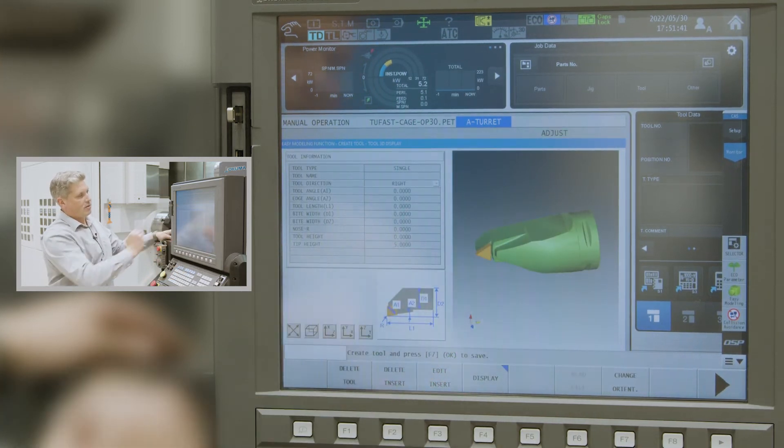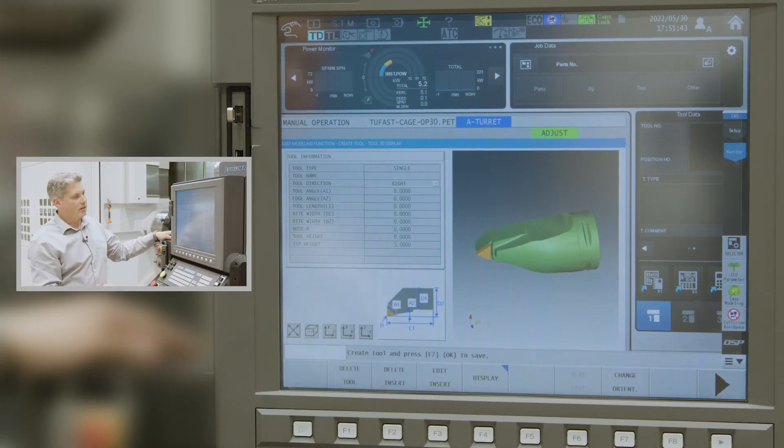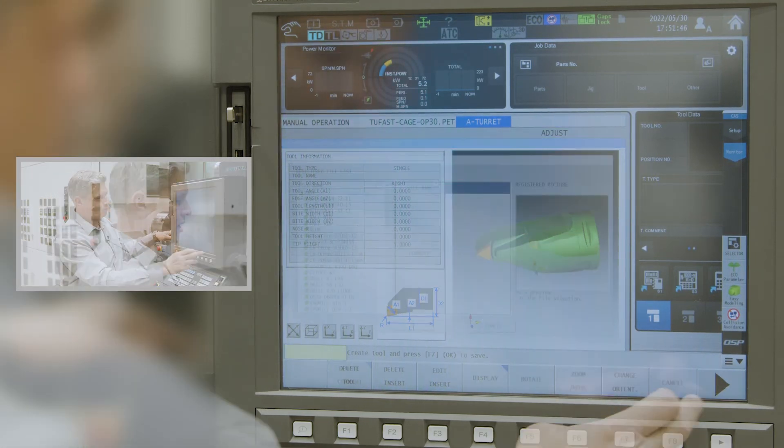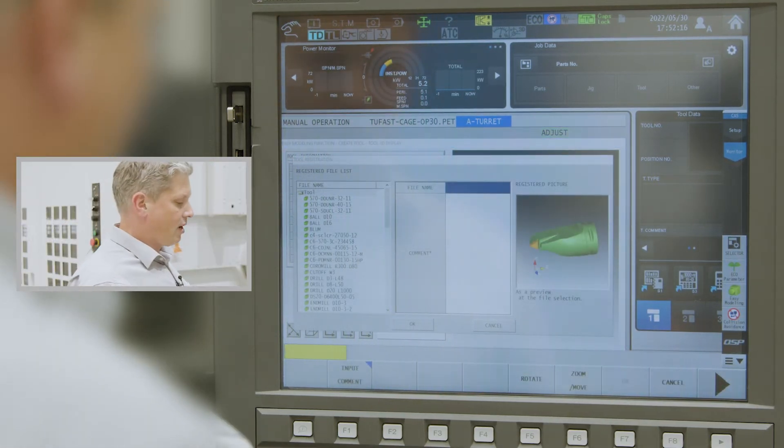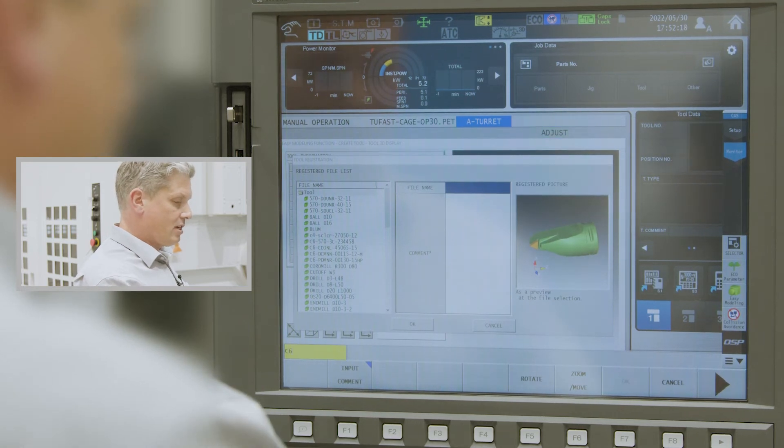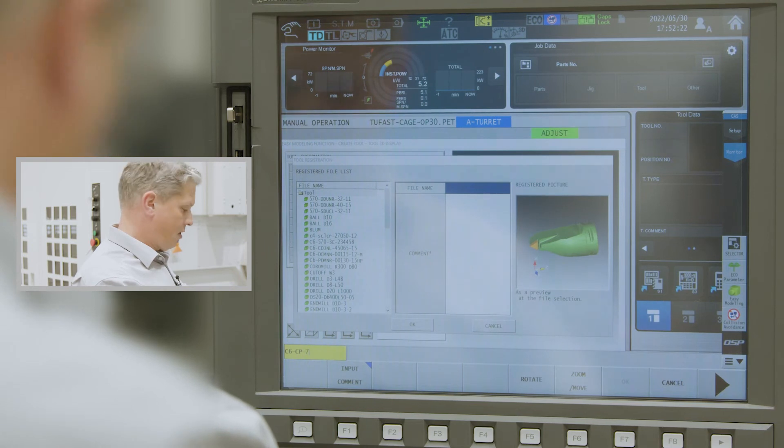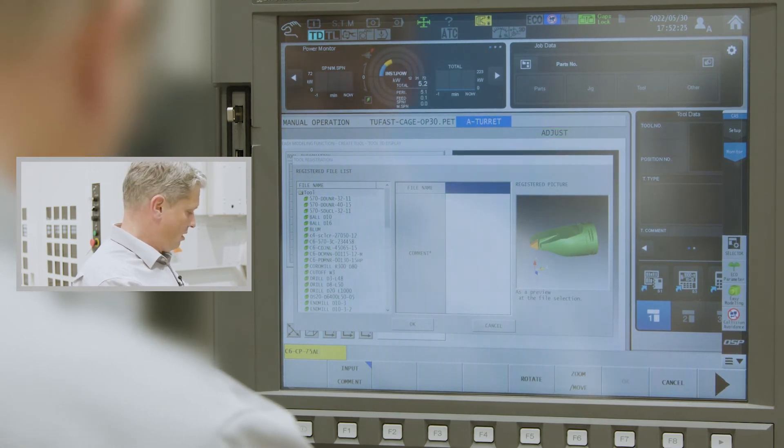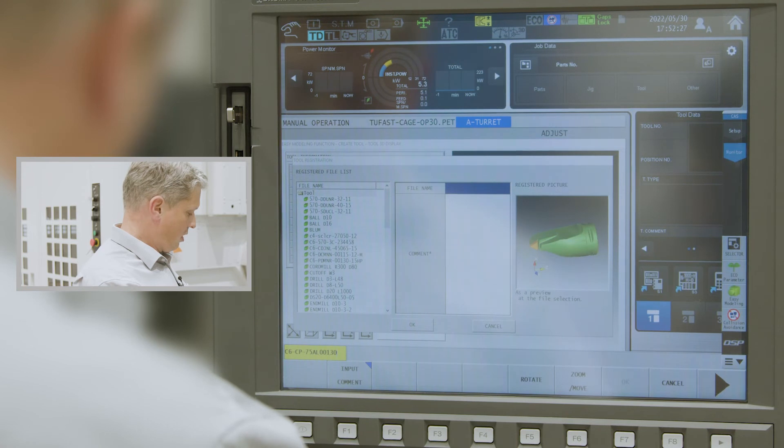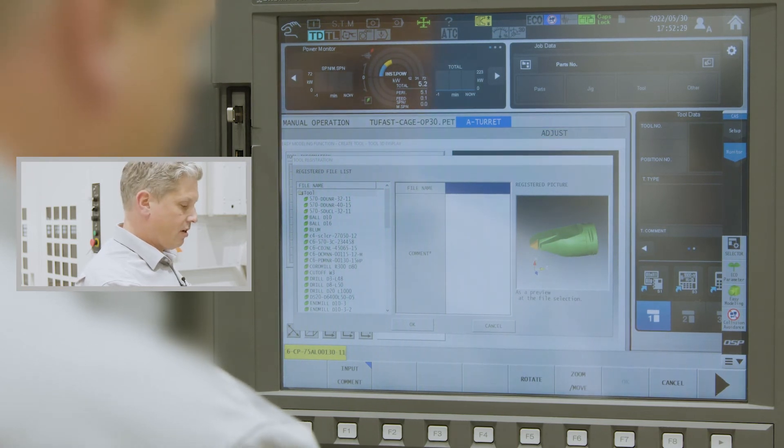After that, I have the insert placed into my cutting tool and can use it for collision avoidance. I'll store this file under its name, which is C6-CP-75AL00130-11C.